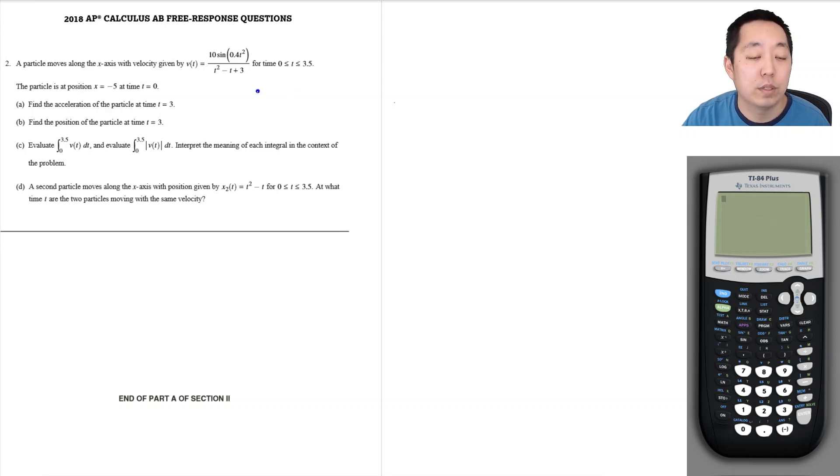Find the acceleration of the particle. Well the relationship between velocity and acceleration a of t is equal to v prime of t and so I'm going to use my calculator to calculate that.